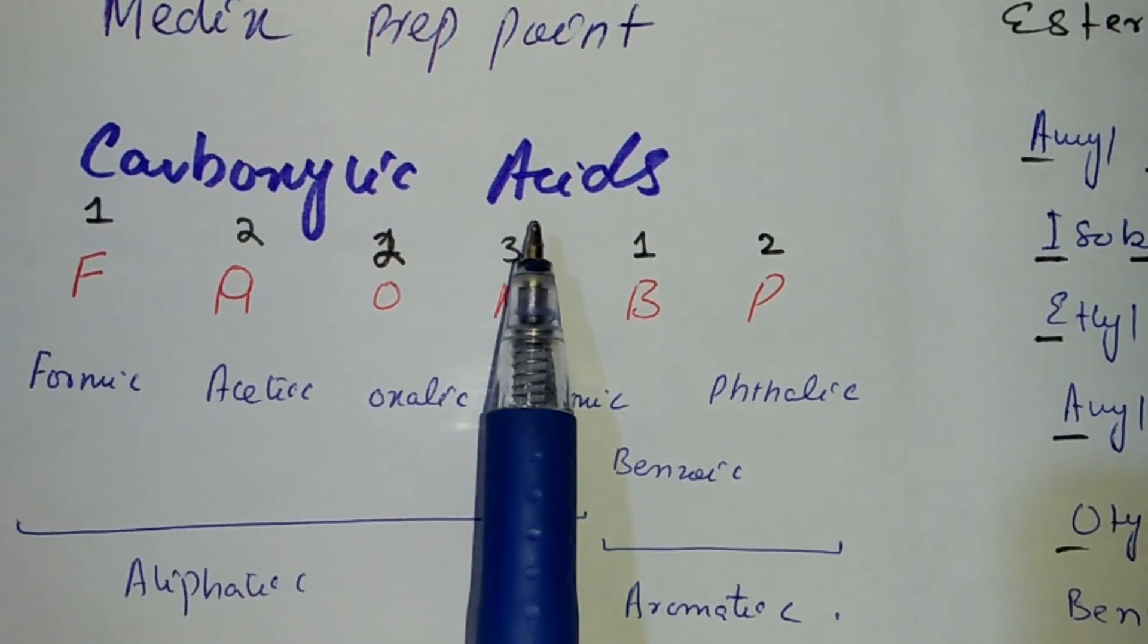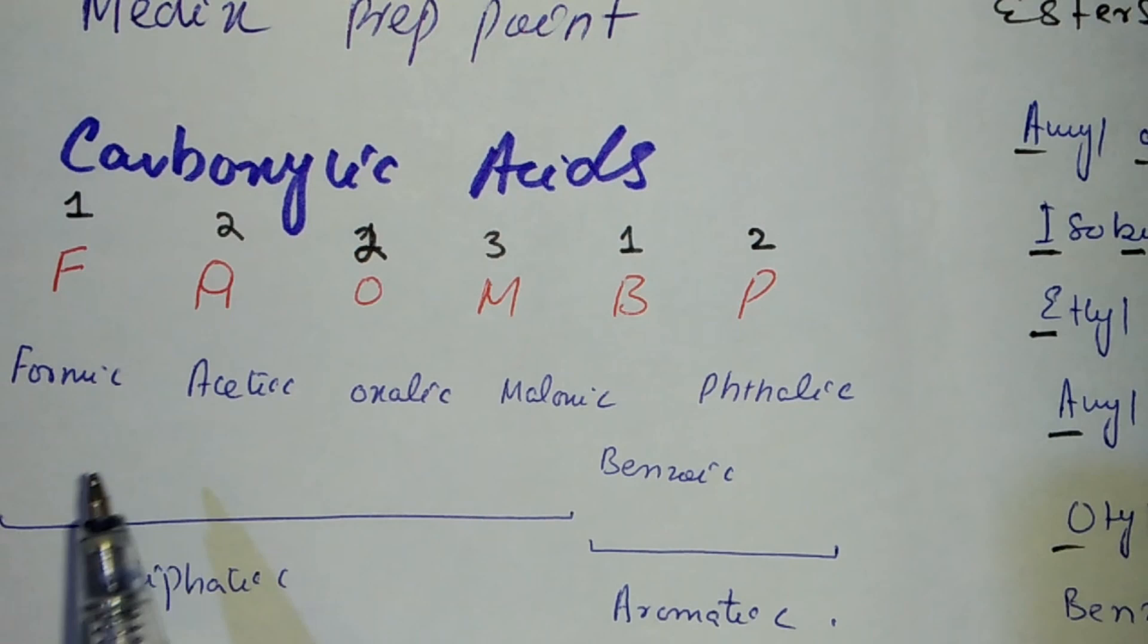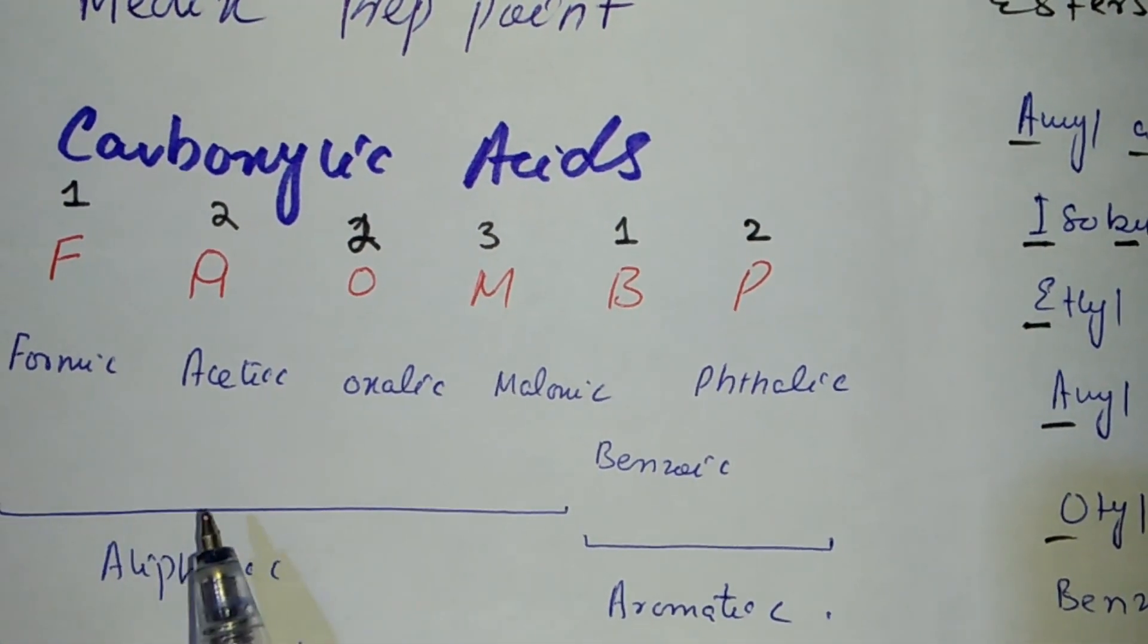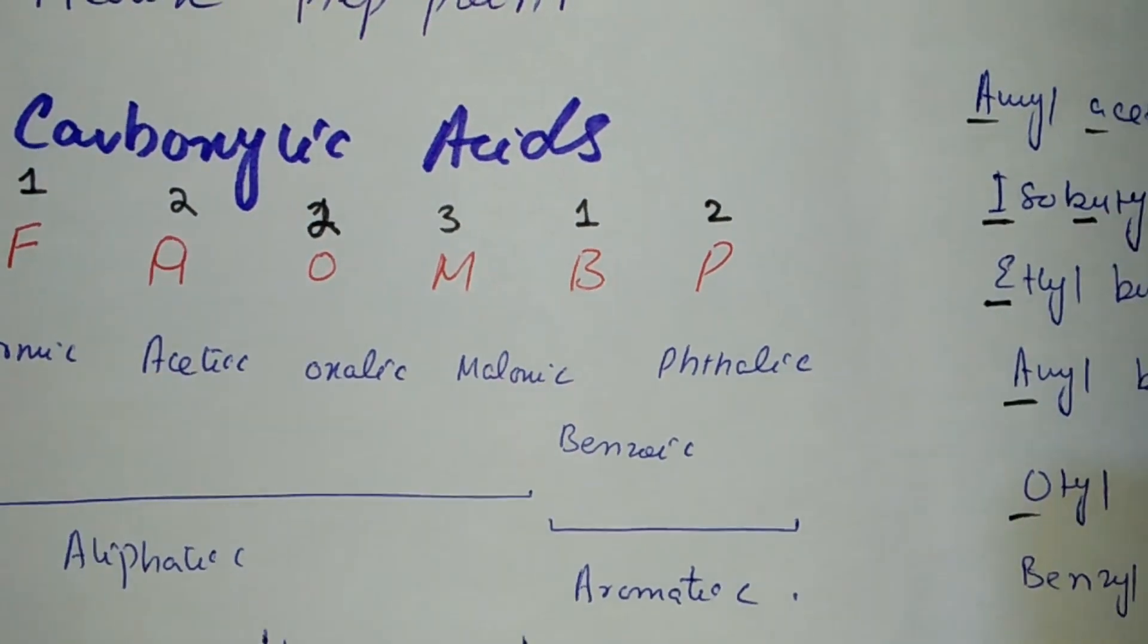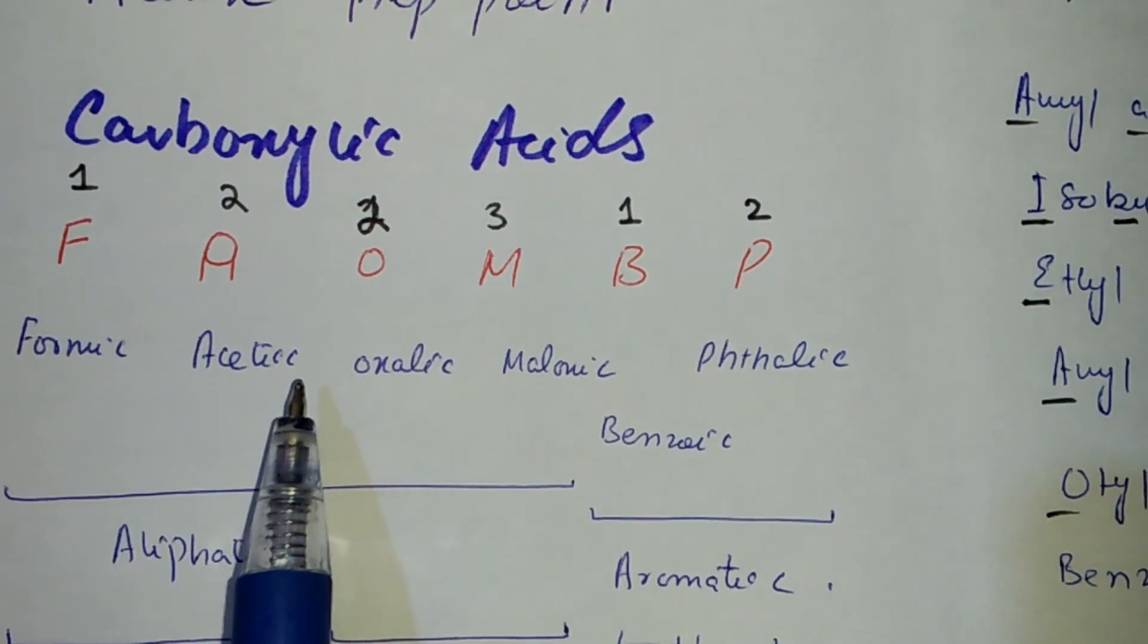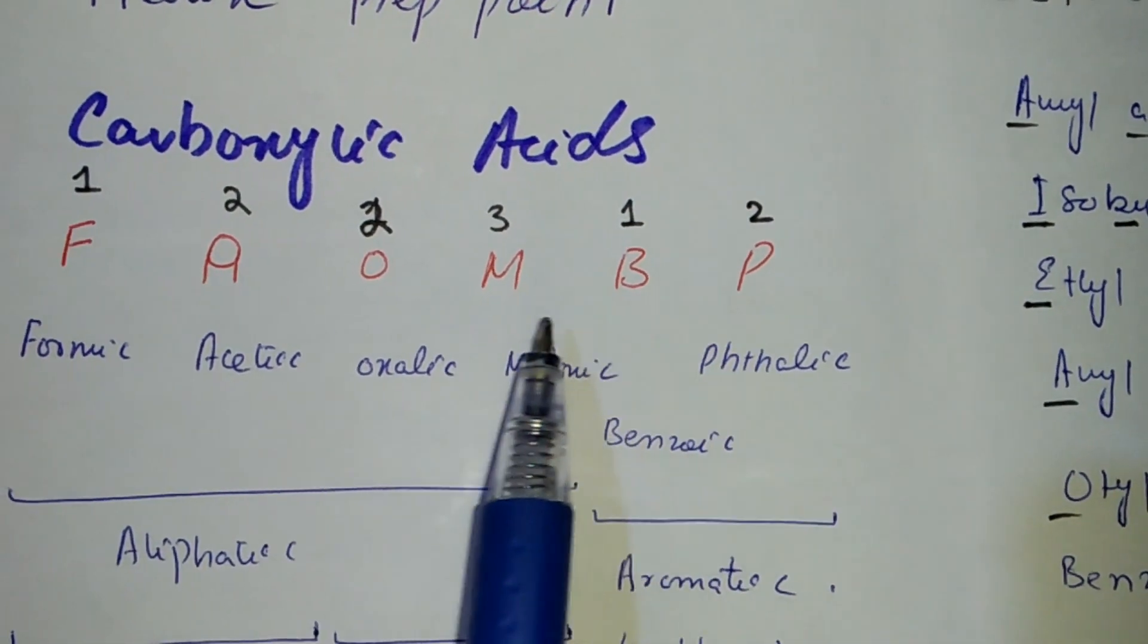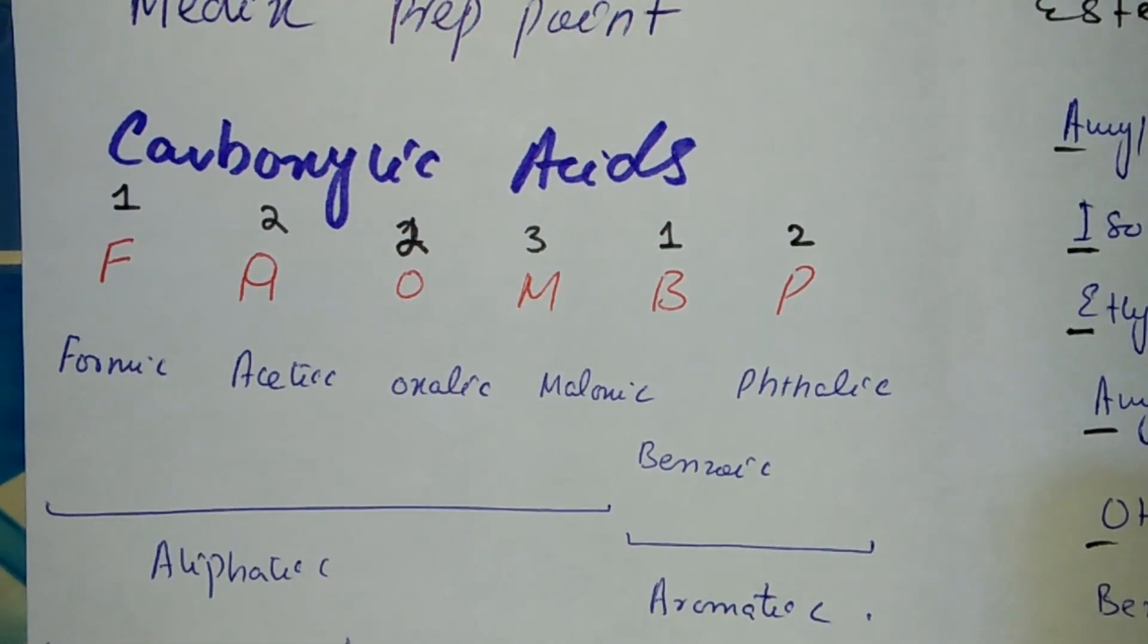Today we will see Carboxylic Acids. In this chapter, we will start some very important concepts, points and tricks. The first thing we have is the different types of Carboxylic Acids. It's very difficult to memorize them, so we can memorize them as FAOMBP.